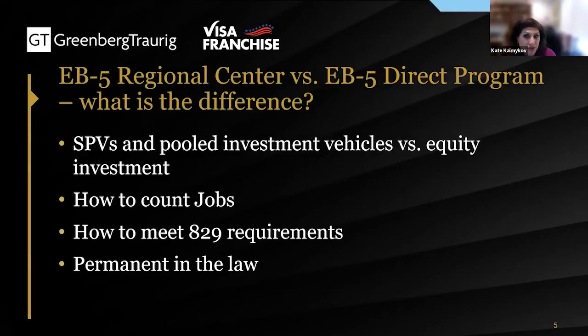When you work with an EB-5 regional center, it's different than a direct because as a direct investor you're coming in as an equity investor directly into your business. When you invest in a regional center, typically a fund is formed — a special purpose vehicle — and investors pool their money into the fund, either an LLC or a limited partnership. That pooled money gets loaned to a project most commonly, or it can take a preferred equity stake. Under the new EB-5 law, you can no longer pool direct investors into projects — there are no pools allowed for direct EB-5 investment.